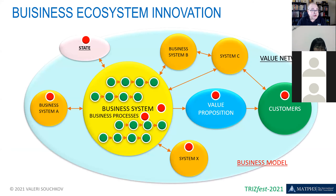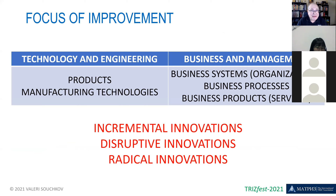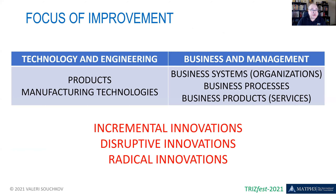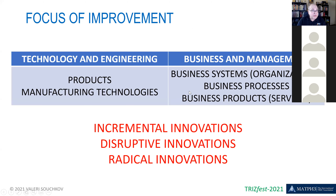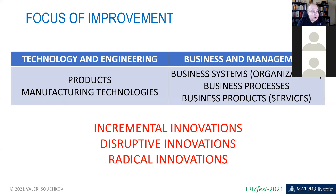When we speak about technology, on the left part, we're talking about innovation as a process generated from an invention. We invent either products or manufacturing technologies — those are the two areas where we can innovate in technology.